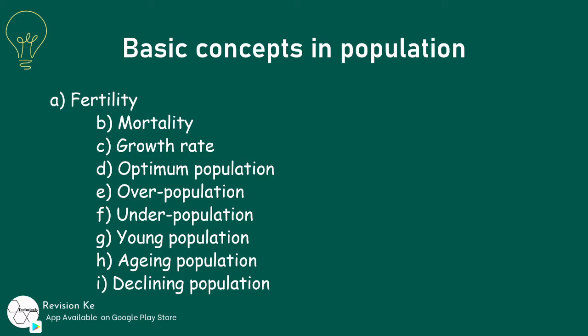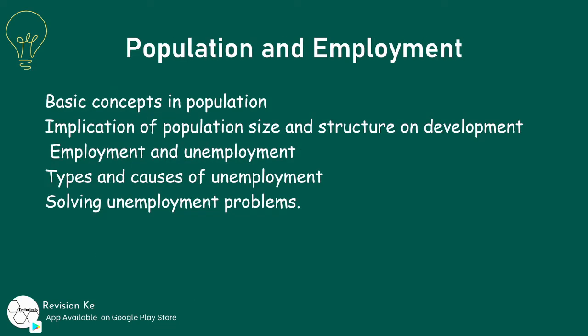We have fertility, which is defined as the ability of a woman to give birth to a live child. We also have mortality, growth rates, optimum population, overpopulation, underpopulation, young population, aging population, and declining population. These are the basic concepts of population that we need to be able to explain.